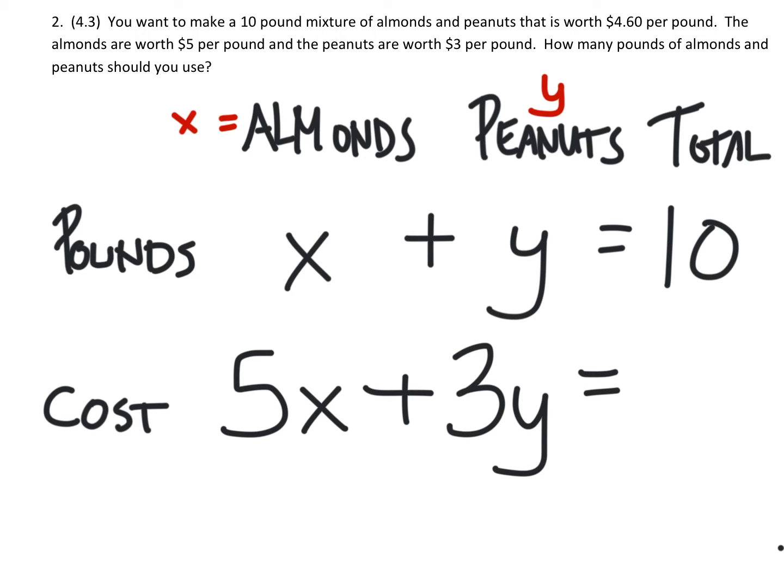When we've finished this off, we should have $4.60 per pound, but we're purchasing 10 pounds of this, so that'll end up being $46. This gives us a nice little system of equations that we can solve.